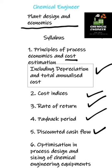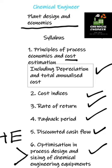In the last chapter, we have designing. Here we focus on optimization in process design and sizing of chemical engineering equipment. Specifically, we will only be focusing on heat exchangers and multi-stage contactors — these two are the only topics in the last chapter.